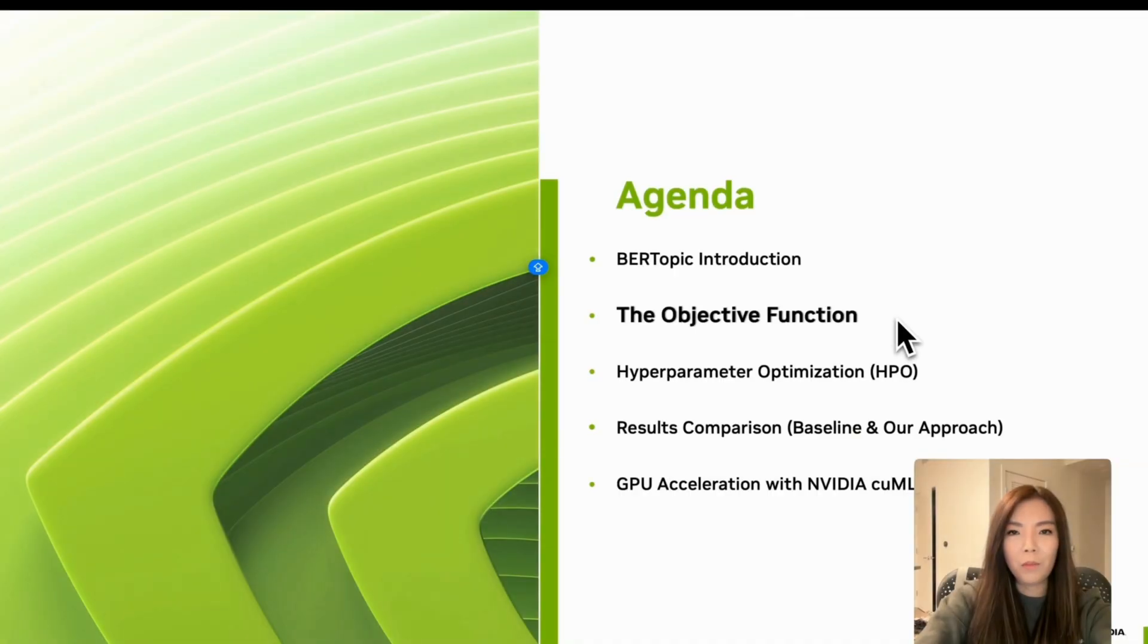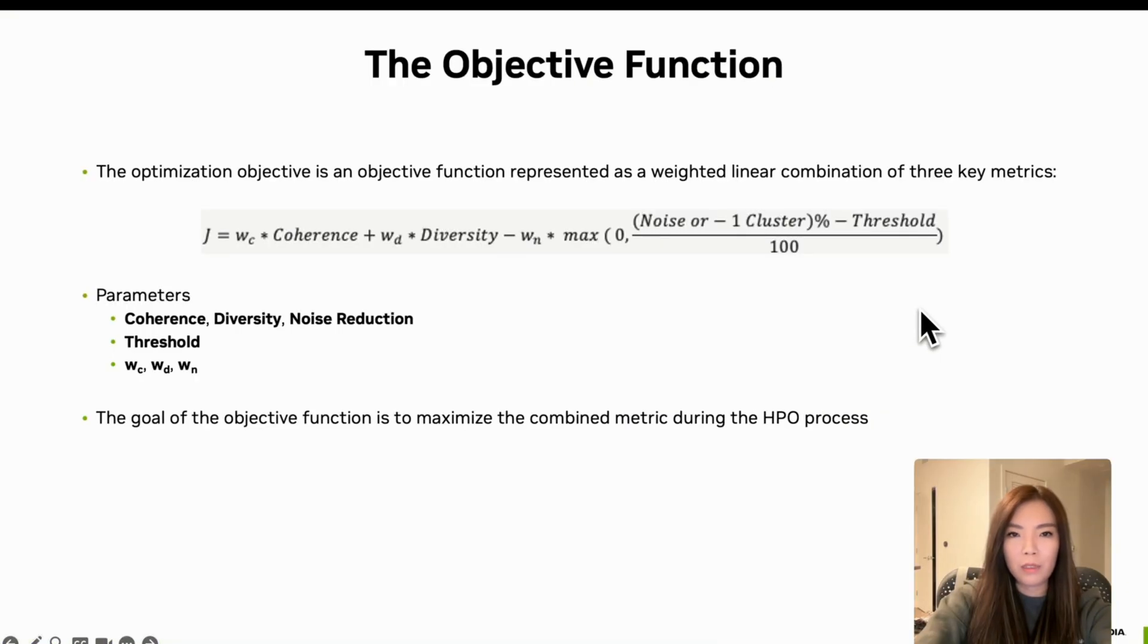Next, let's focus on the most critical component of our approach, the objective function. Why is this important? Because in topic modeling, especially with noisy real-world data, the quality of your output is only as good as the criteria you are optimizing for.